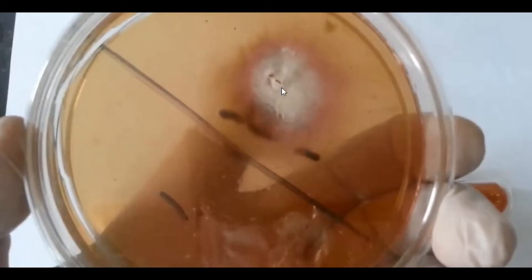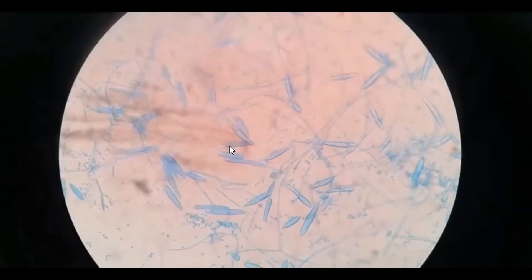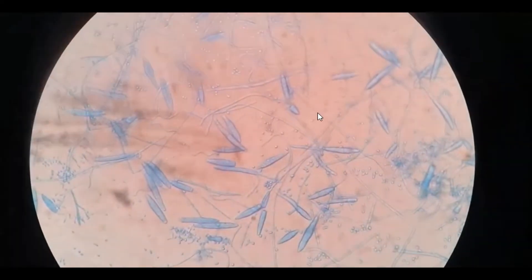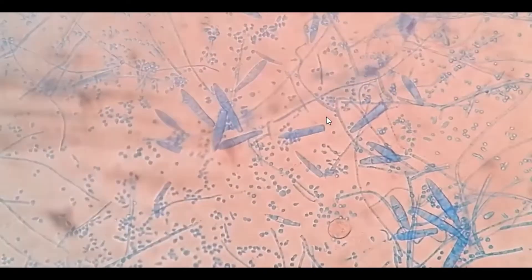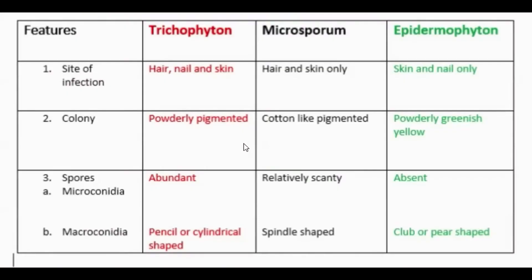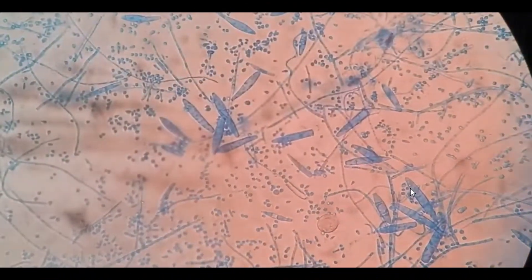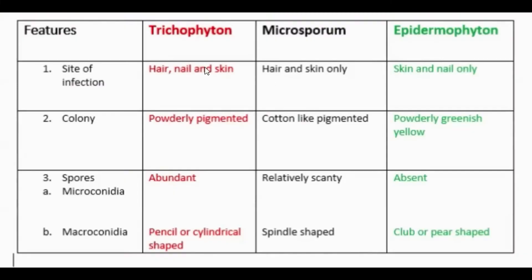Let's watch the clip. Here you can see powdery pigmented colonies, and here you can see abundant microconidia — many microconidia in this field. And about macroconidia — pencil or cylindrical shape — here you can see pencil shape. So the organism is Trichophyton.